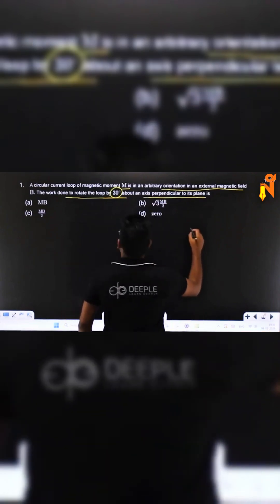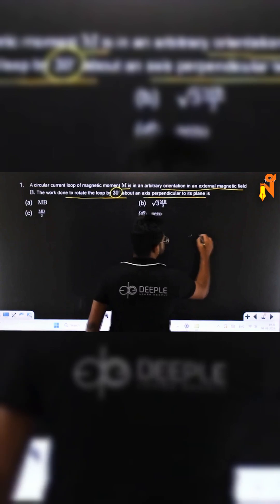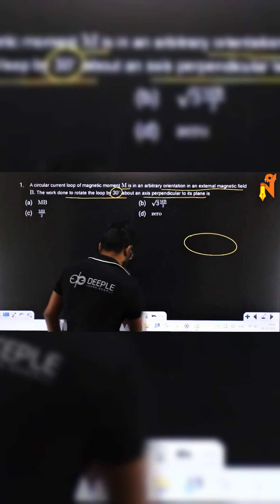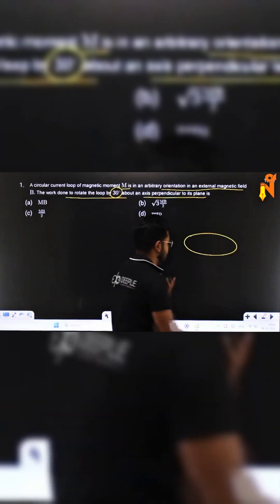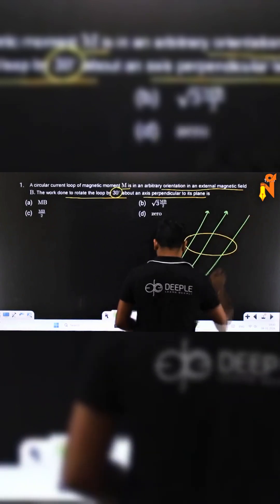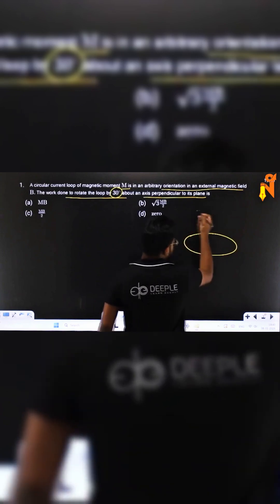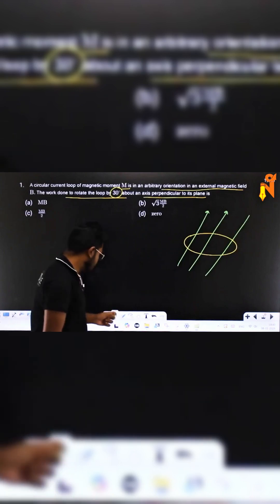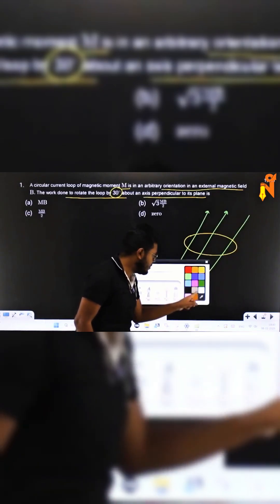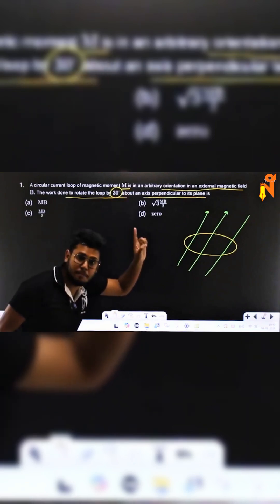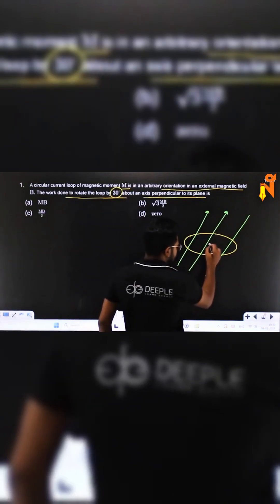Let's say we got an axis like this is the loop. Now they have given the magnetic field to be at any arbitrary angle, so let me assume any arbitrary angle like this. If I look at the axis, what they are talking about, they are saying an axis which is perpendicular to the plane. Perpendicular to the plane means this axis.